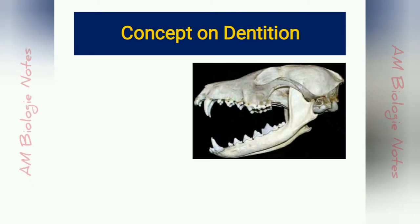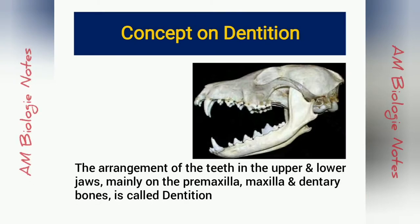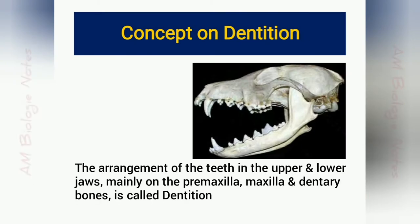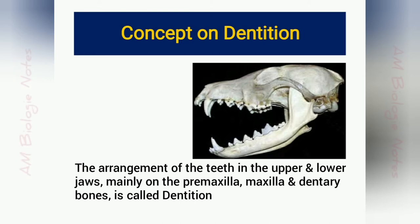The arrangement of teeth in the upper and lower jaws, mainly on the premaxilla, maxilla, and dentary bones, is called dentition.